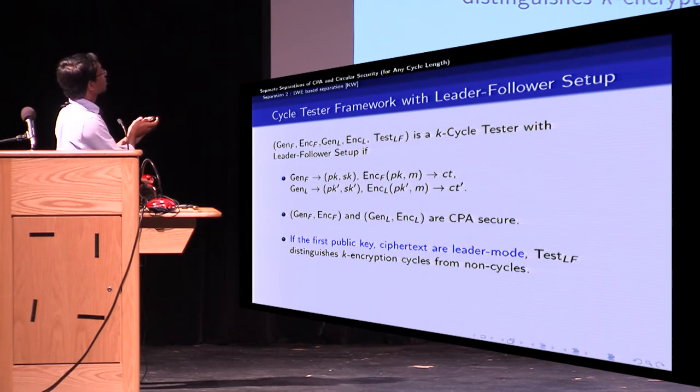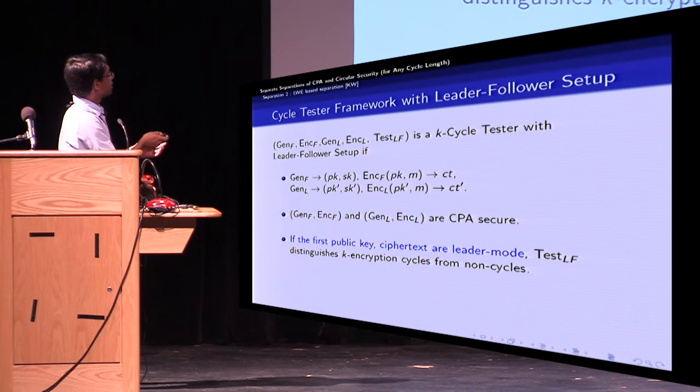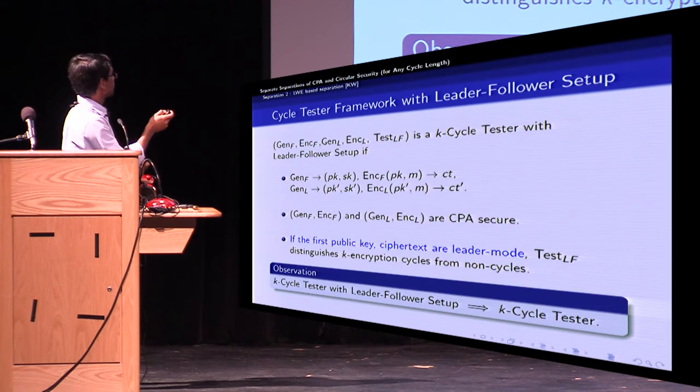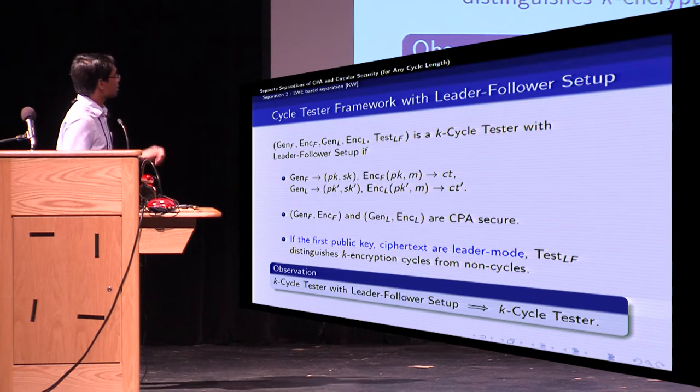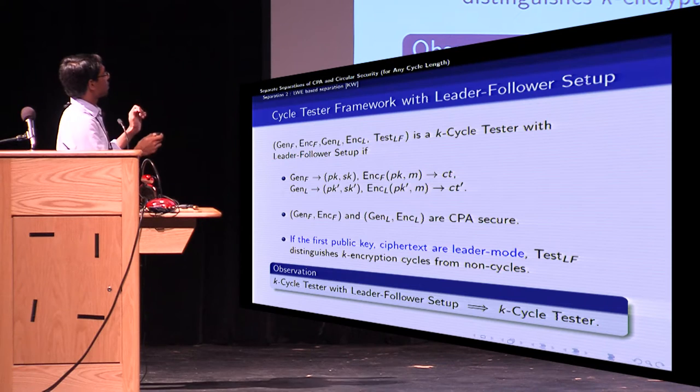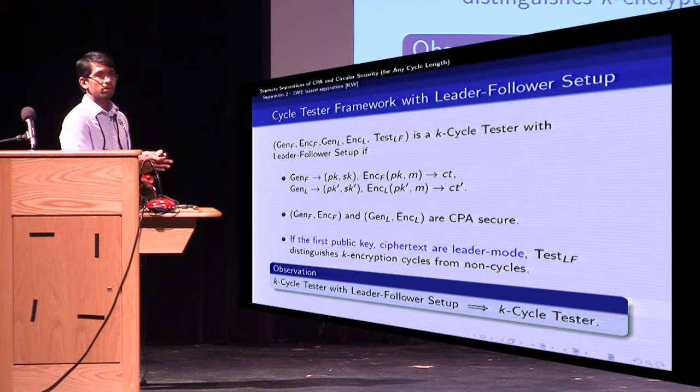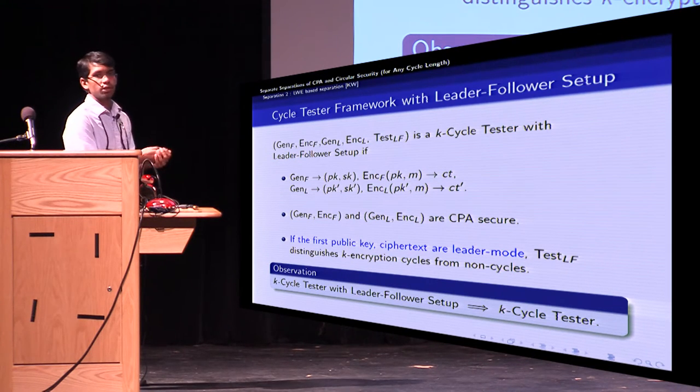So if we can construct these five algorithms, then it's easy to see how this implies a K cycle tester. I won't talk about that in this talk. But it's easy to transform the K cycle tester with leader followers setup to the BHW K cycle tester.